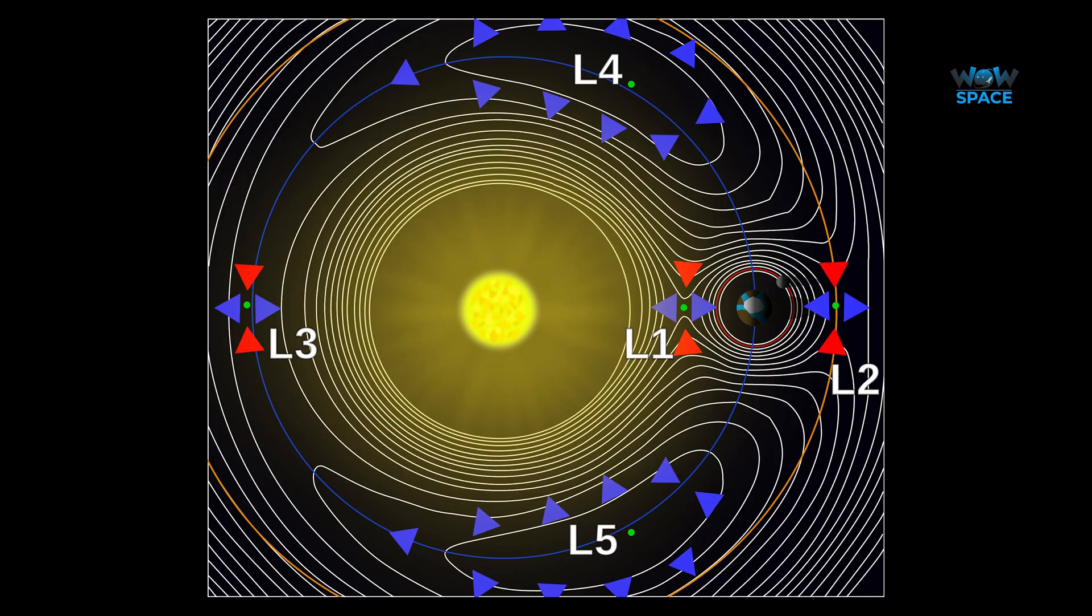A hill sphere is the region around an object where the gravitational pull of that object overcomes the gravitational pull of anything else. For instance, the Moon orbits the Earth because it is within the Earth's hill sphere. It's close enough that the Earth's gravitational exertion on the Moon dominates the Sun's.